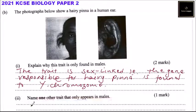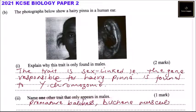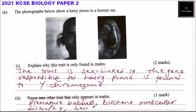Number two: name one of the traits that only appear in males. One such trait is premature baldness. Another one is Duchenne muscular dystrophy — this is progressive muscular weakness. And we also have hairy nose. These are traits that only appear in men; if you mention any one of these, you should be able to get that one mark.